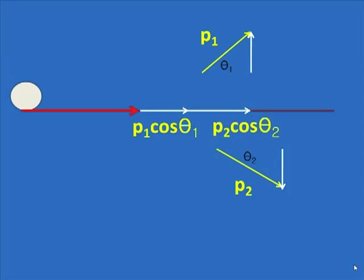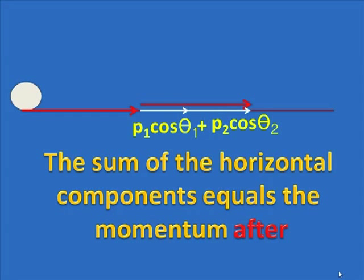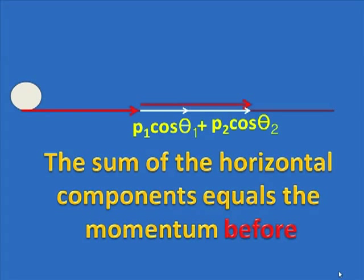There's P1 cos theta1. There's P2 cos theta2. And look what happens now when I bring the momentum before over. I bring that momentum over, and it equals the sum of the two components. What we can say is that the sum of the horizontal components, yes, it's the momentum after the collision, but the sum of the horizontal components is also the momentum before the collision of this system.